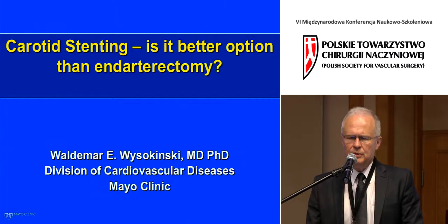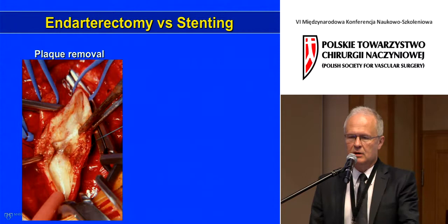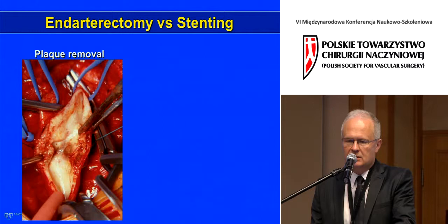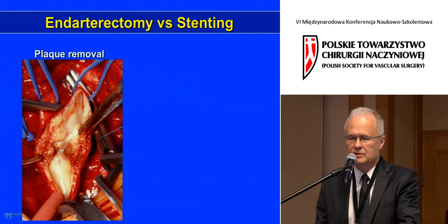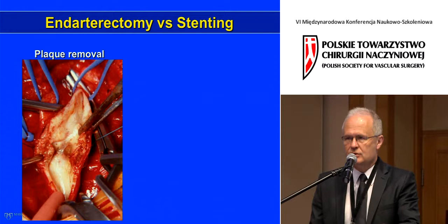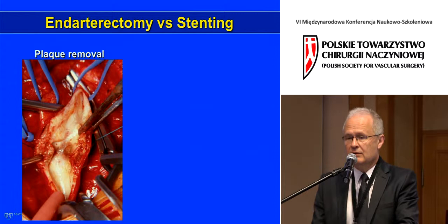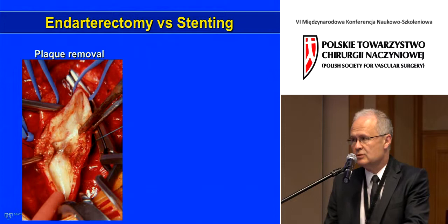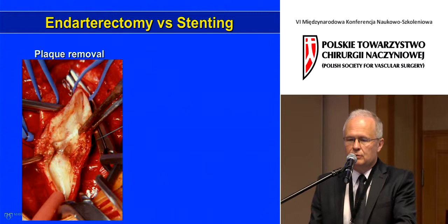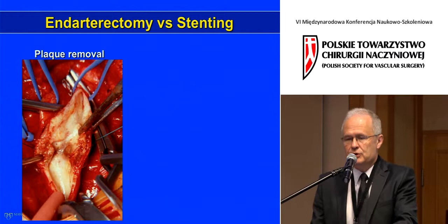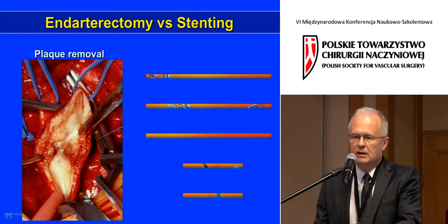When we talk about carotid stenting and carotid endarterectomy, we have to realize that those two are quite different procedures. Carotid endarterectomy is plaque removal — we clamp the artery on both ends, scrape off atherosclerotic lesions, and have ideal protection from thrombotic complications within about 30 minutes of total clamping time. Then we restore blood flow, nowadays almost always with patching.